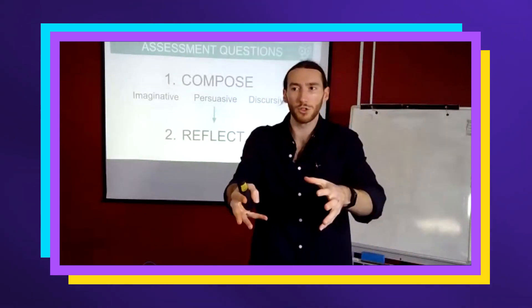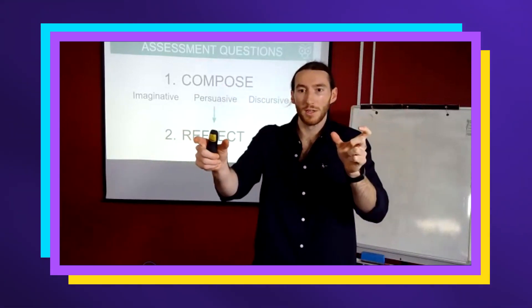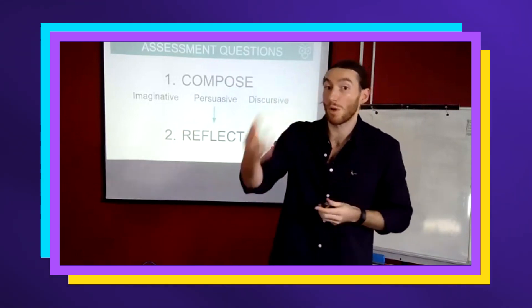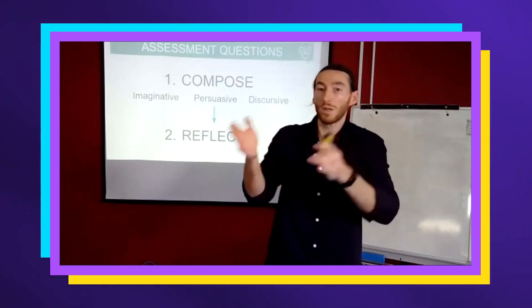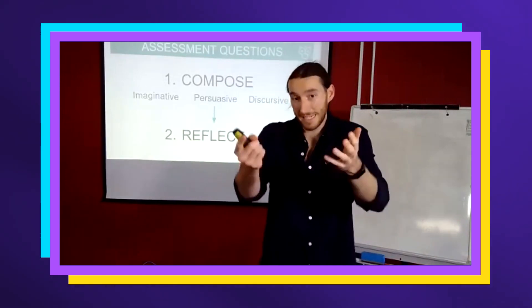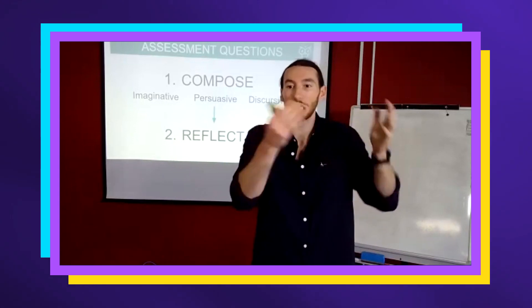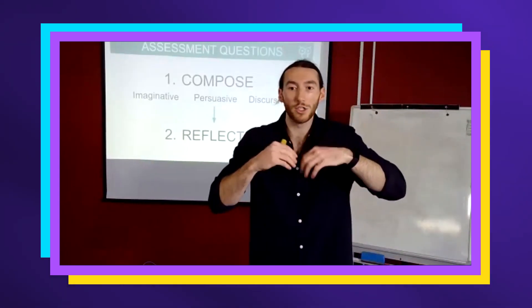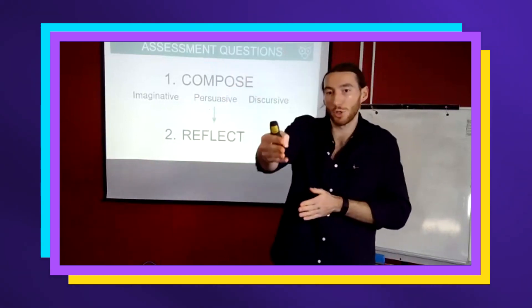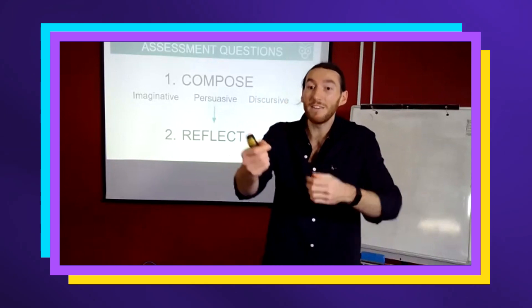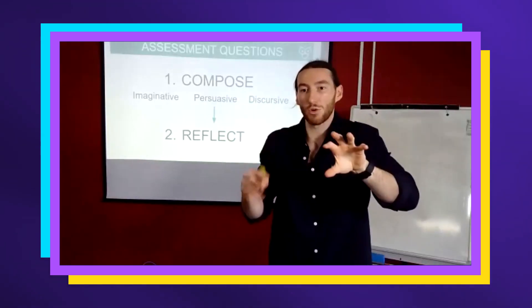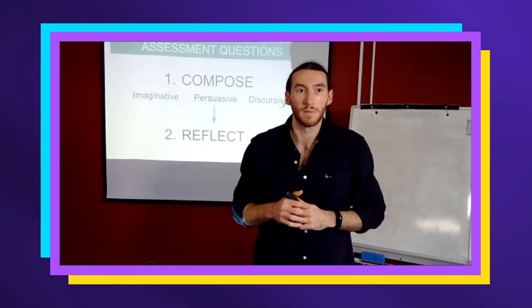So the drafting process is: one core draft with two variations for the other two forms. Over-emphasize the things unique to those forms so it's clear to the marker. If you prepared an imaginative and need to do a persuasive, what's something you could do to begin it so it's super obvious it's a persuasive? Rhetorical questions — they are very clearly aligned with persuasive rhetoric. You wouldn't necessarily see that a lot in an imaginative, so that's the kind of feature you can open with.